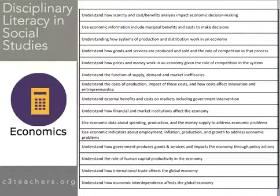These are the 15 indicators in the economic strand of the C3 framework. Most of these indicators focus on concepts and foundational understandings that support the field. Here you see a summary of the 15 indicator pathways, and note how many of these are focused on conceptual knowledge. The first one: understand how scarcity and cost-benefit analysis impact economic decision-making. There are two very important economics concepts in this summary statement — scarcity and cost-benefit analysis — and so we need to provide students with opportunities to encounter those concepts and work with them as they build up their literacy.